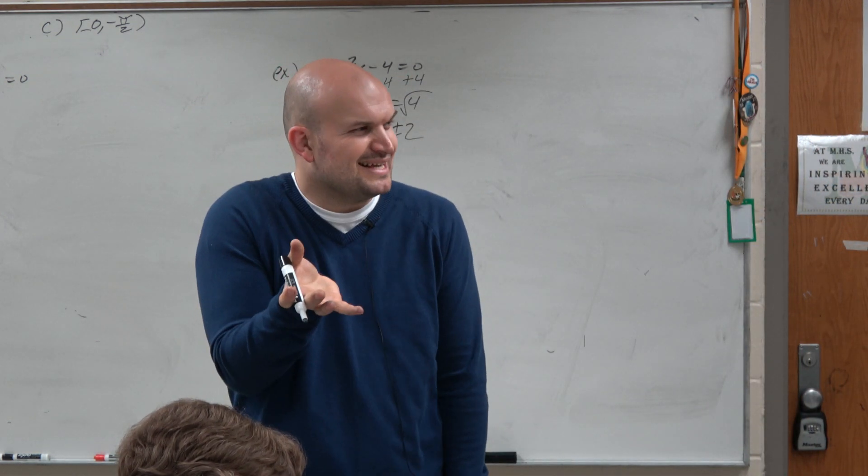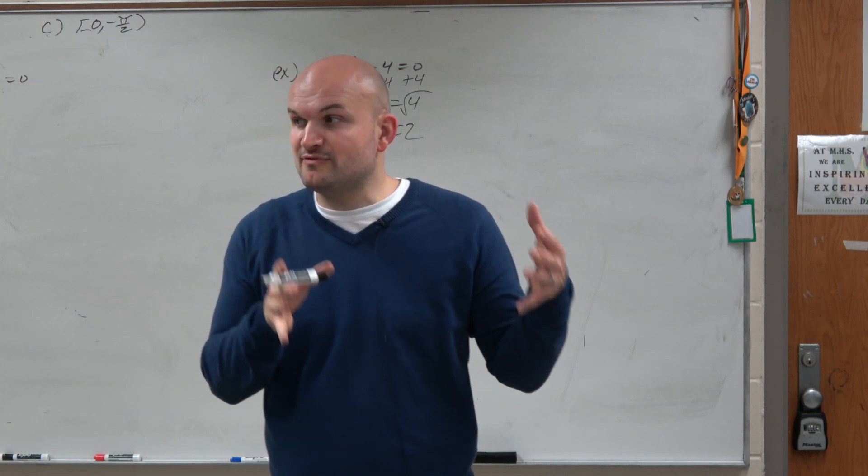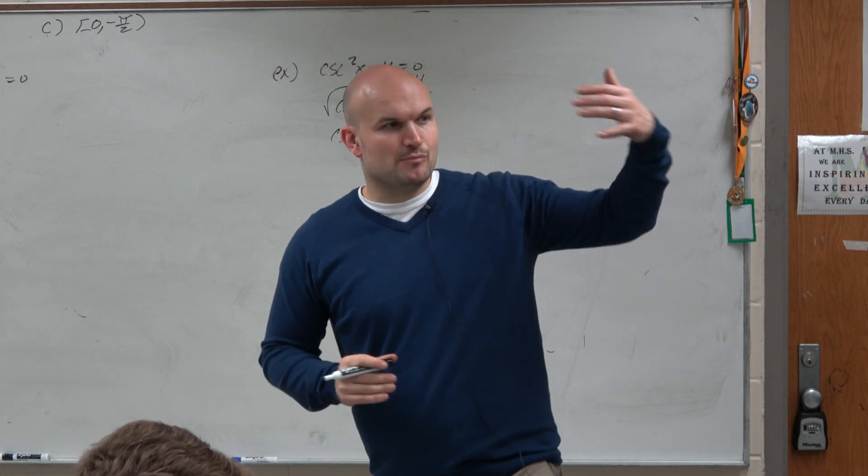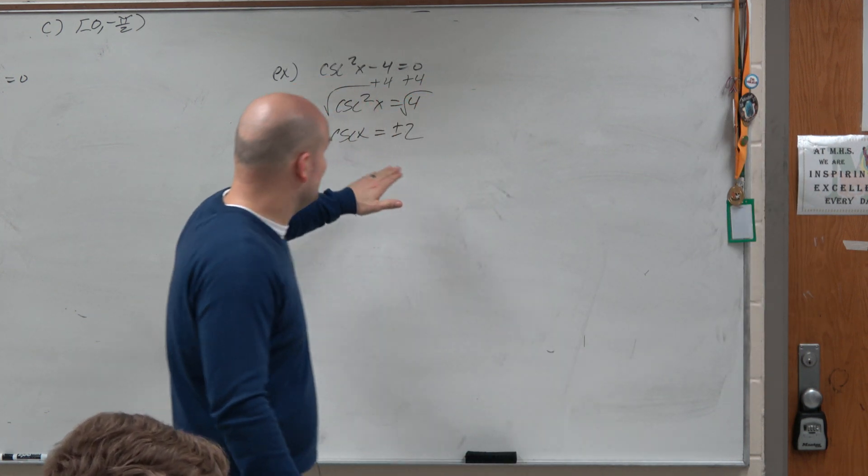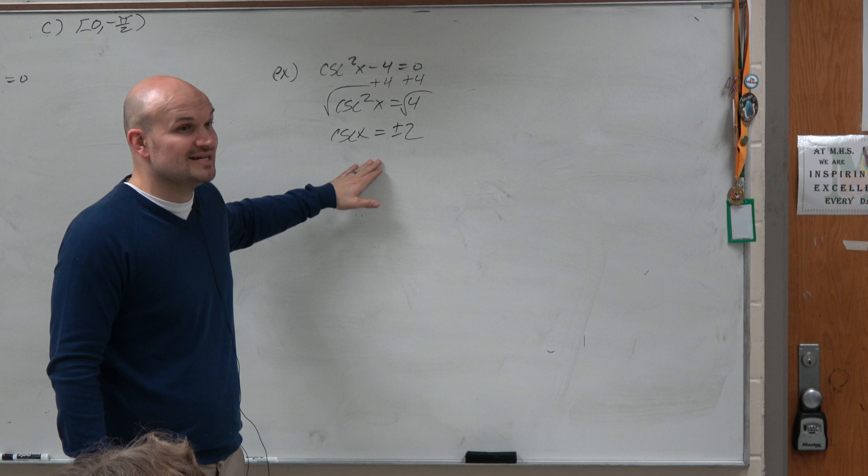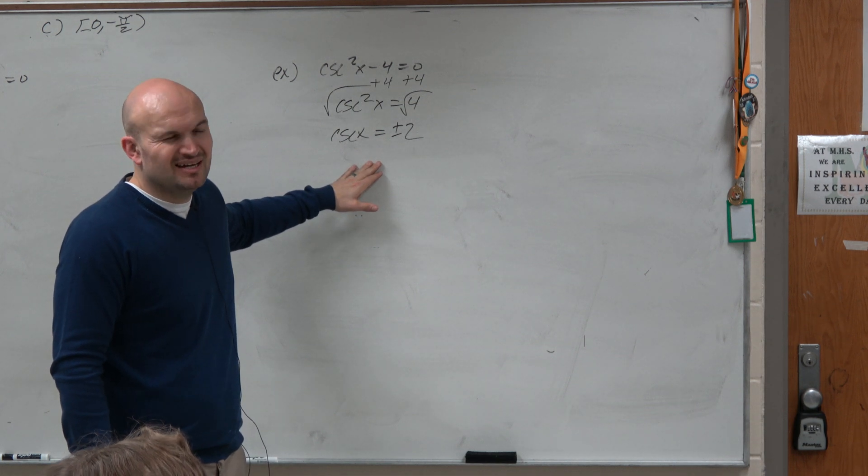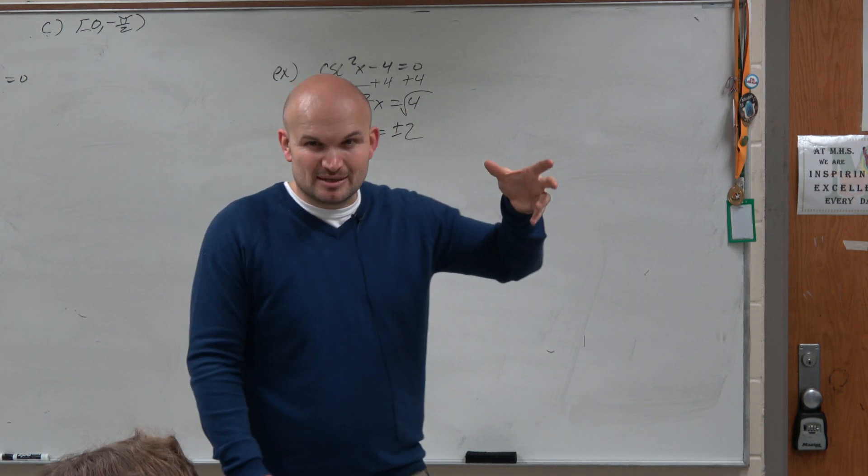Now, what does cosecant equal? Now, here's something that I didn't introduce before to you guys, because I wanted you to have more practice with your identities, right? Cosecant is 1 over y based on the unit circle. Would you guys agree? Which is a little bit too much, I think, to think about.